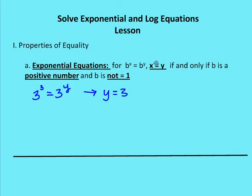In exponential equations, for b to the x equal to b to the y, x is going to be equal to y, if and only if b is a positive number and b is not equal to one. So if I have three to the third equal to three to the y, then y has to be equal to three. Three to the third is 27, and we figure out the value of y that makes the right side equal to 27, which is three.